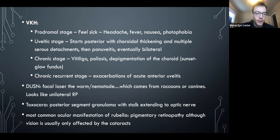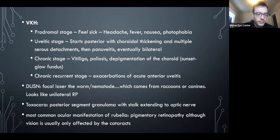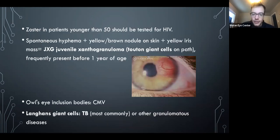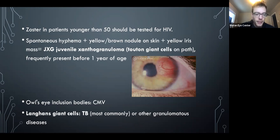A few final high-yield factoids: in VKH, the chronic recurrent stage presents as anterior uveitis — the classic posterior effusions are in the acute first presentation. CSR shows an expansile dot more commonly than the smokestack pattern. Juvenile xanthogranuloma presents with hyphemas in young infants and shows Touton giant cells on pathology. Good luck — you're going to crush it!